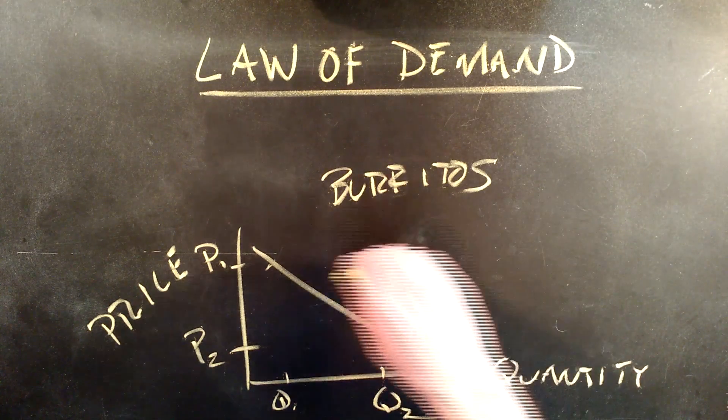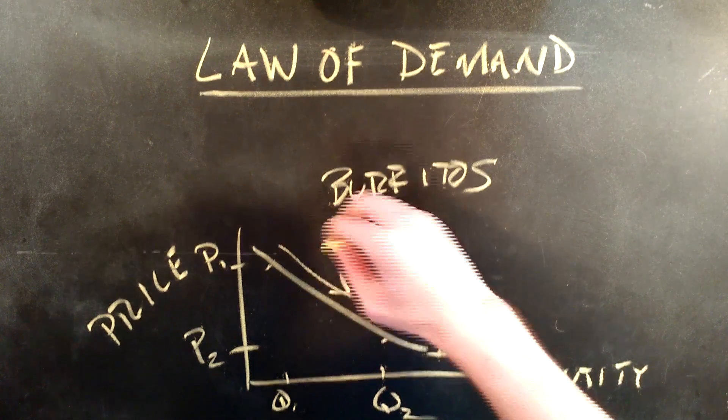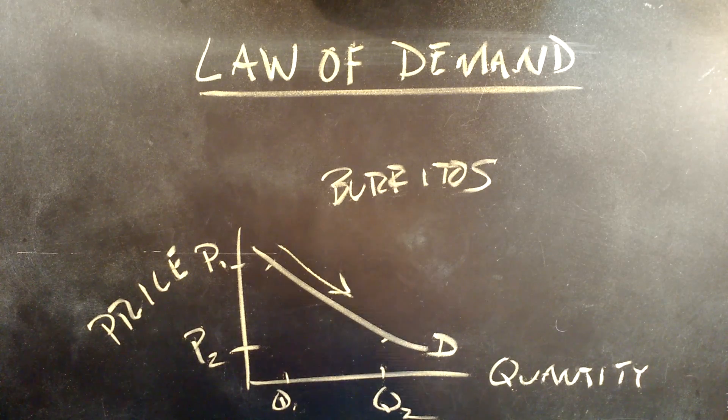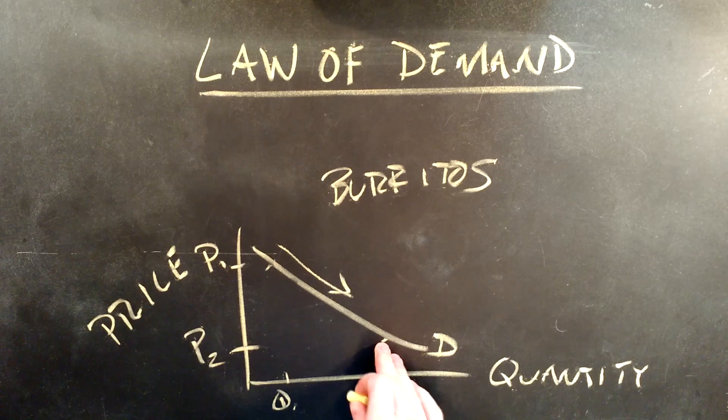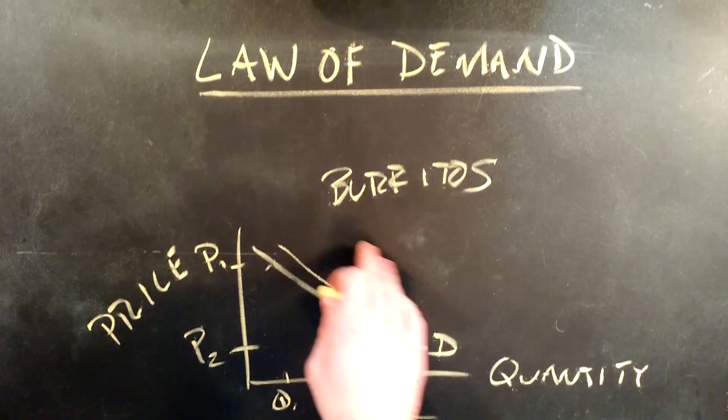Changes in price result in a change along the curve. Changes in other factors would cause a shift in the curve. So the quantity demanded along this curve is how much consumers want at every given price.